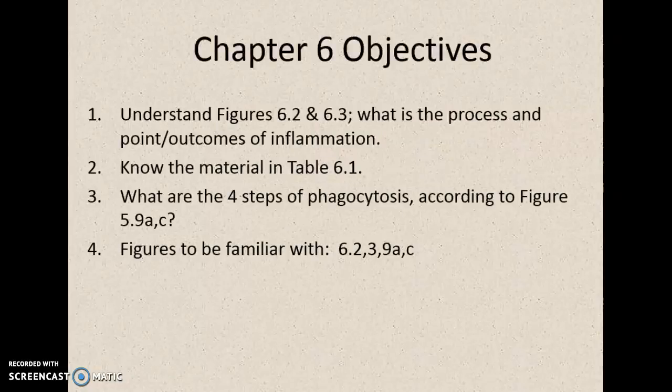Here are your Chapter 6 objectives. There are only three figures that you're going to have to focus on: 6.2 and 6.3, which look at the process, the point, and the outcomes of inflammation. Then you're going to want to be very familiar with Table 6.1, which is a review or summary table for innate and adaptive immunity. And then Figure 6.9 is going to look at the four steps of phagocytosis.